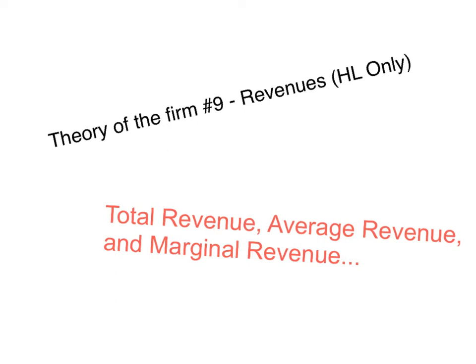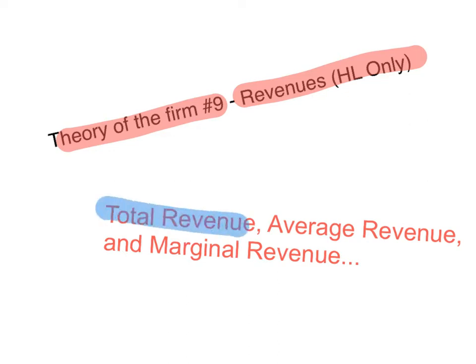This is video number 9 of the Theory of the Firm series. In this video, I'm going to focus more on revenues. Remember, this is in the high-level only section of the IB Economics Microeconomics syllabus. In this video, I'm going to explain the concepts of total revenue, average revenue, and marginal revenue.